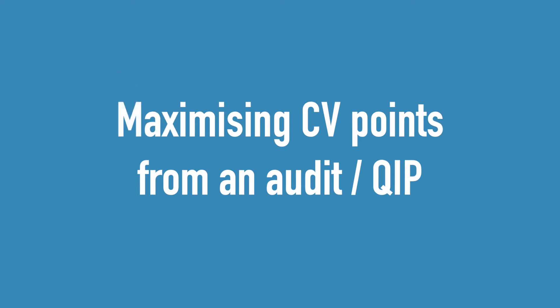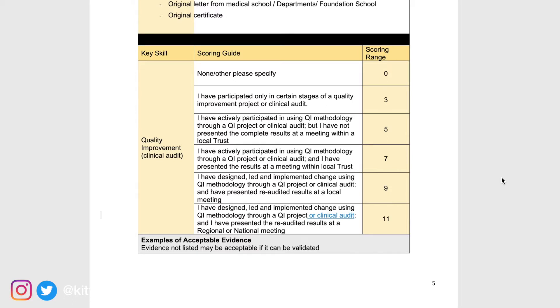Let's take a look at the core surgical training checklist to gain an idea of what you need to do to get maximum points for an audit. Looking at this table from the 2020 portfolio guidance, you can see that just doing the QI project or clinical audit alone will only score you five points out of a maximum of 11. To score more points you will have to present the results at your local trust and re-audit the data. To score maximum points, you will have to present the re-audited results at a regional or national meeting. Note that presenting your audit will also score you points in the presentation section, and likewise for publications.